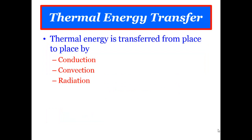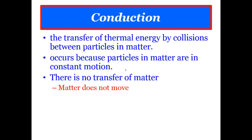So there are three ways that thermal energy can transfer from place to place: conduction, convection, and radiation. The first one we're going to talk about is conduction. Conduction is the transfer of thermal energy by collisions between the particles in matter. The key here is that there has to be collisions — there has to be actual contact between the particles in matter in order for conduction to occur.